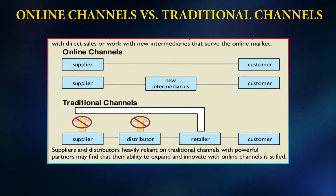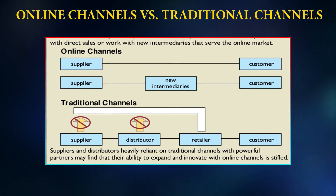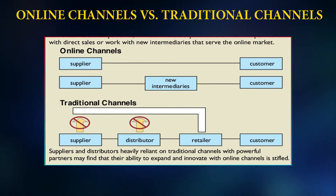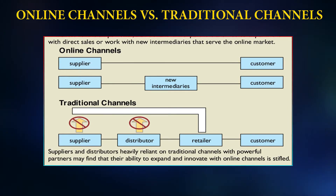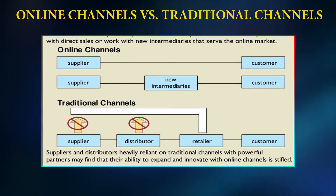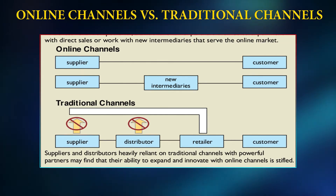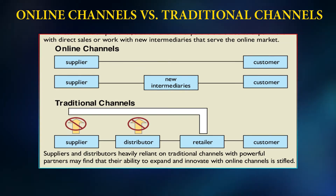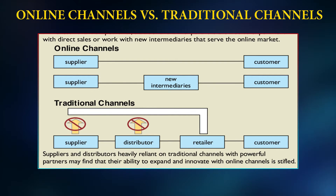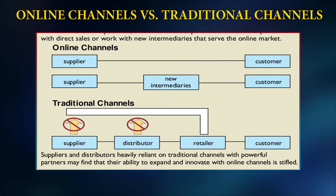Looking at online channel versus traditional channel: today, the online channel is quite different — the supplier is directly linked with the consumer with no intermediary. In the online model, new intermediaries exist, then the customer. In contrast, the traditional channel has many intermediaries: supplier, distributor, retailer, then customer. The repercussion is that the product becomes quite expensive, refund policies and replacements become more complex, and time cost is much higher. So for routine or regular usage products, traditional channels can be an embarrassment.